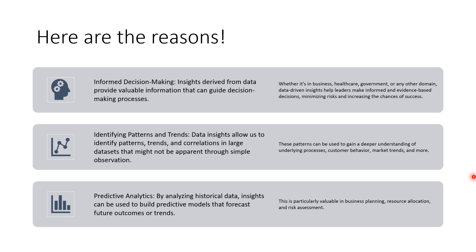The third very important point is predictive analytics. You have a lot of historical data. The insights from that historical data can help you in building predictive models and help you in forecasting the future — predicting outcomes or trends. This kind of predictive analytics is very useful in business planning, resource allocation, and risk assessment. Your business can really be safeguarded — you predict what's going to happen and act accordingly. So we have seen three things: informed decision making, identifying patterns and trends, and predictive analytics.